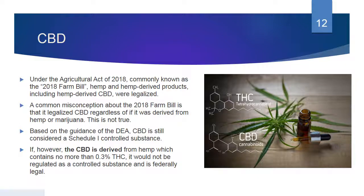Under the Agricultural Bill of 2018, commonly known as the 2018 Farm Bill, hemp and hemp-derived products, including hemp-derived CBD, were legalized. A common misconception about the 2018 Farm Bill is that it legalized CBD regardless of whether it was derived from hemp or marijuana — that's not true. Based on the guidance of the DEA, CBD when derived from marijuana is still considered a Schedule 1 controlled substance. However, if the CBD is derived from hemp containing no more than 0.3% THC, it would not be regulated as a controlled substance and is federally legal.